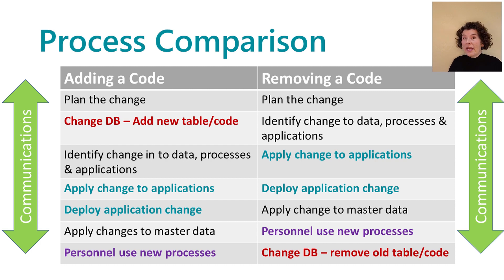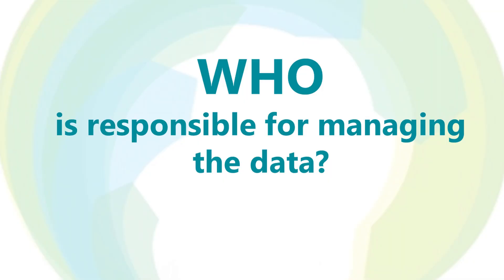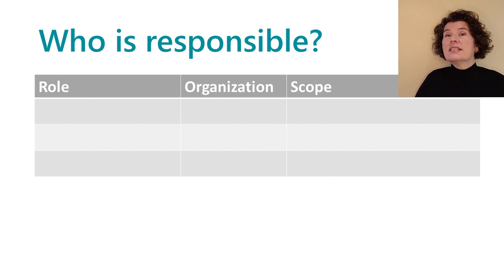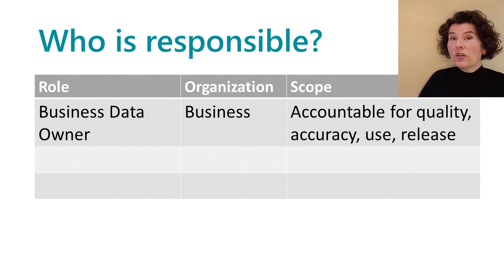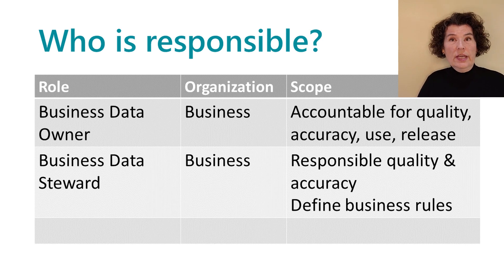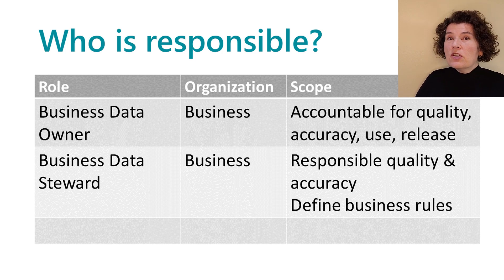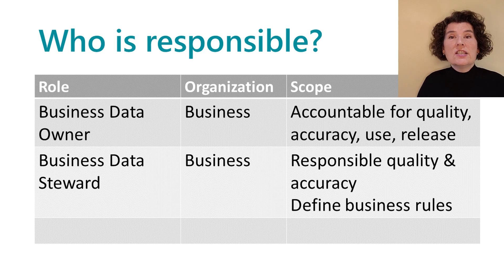Communication and training related to the change happens throughout this process for all affected stakeholders. Each type of data is assigned a business data owner who is accountable for the quality, accuracy, use, and release of the data. Working with that business data owner is a business data steward and a data custodian. The data steward is responsible for the quality and accuracy of the data — they define business rules, resolve issues and discrepancies, perform day-to-day maintenance and grooming of the lists, and define requirements related to the safe storage and utilization of the data. The data steward is a member of the business community.